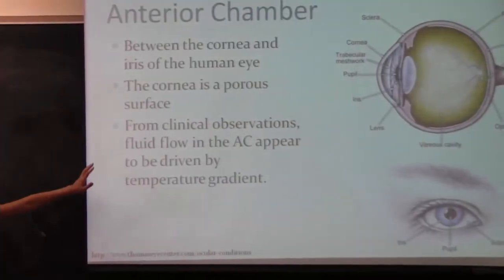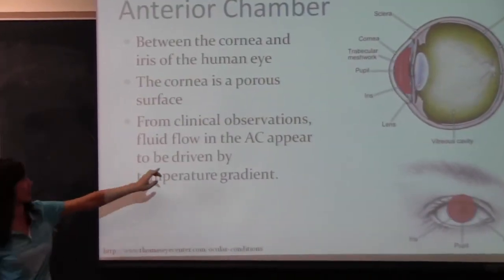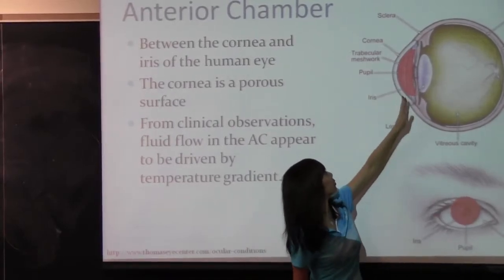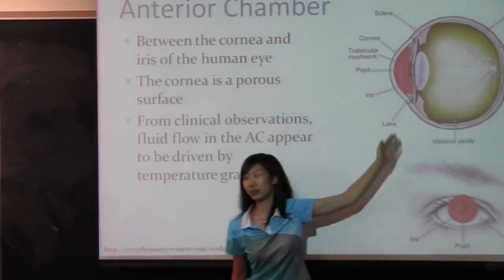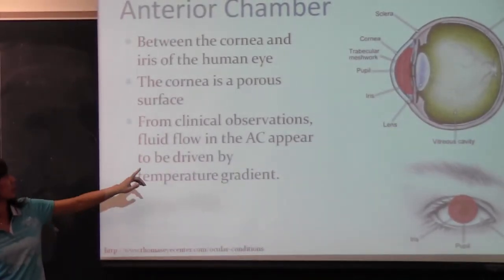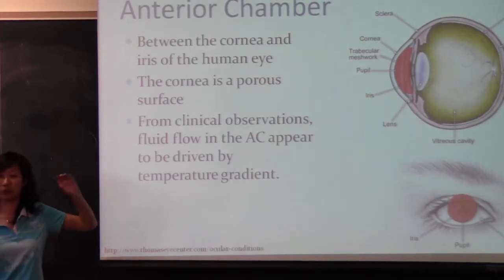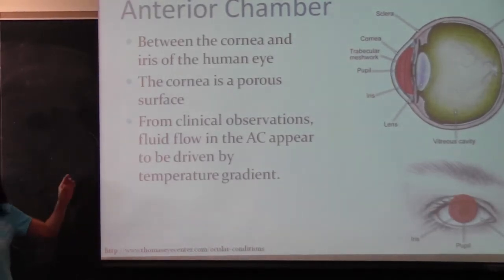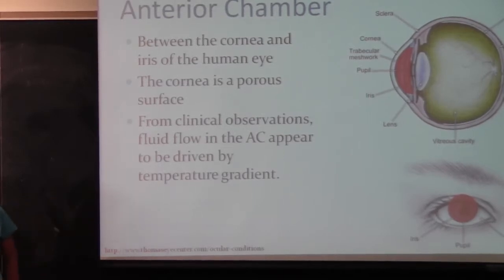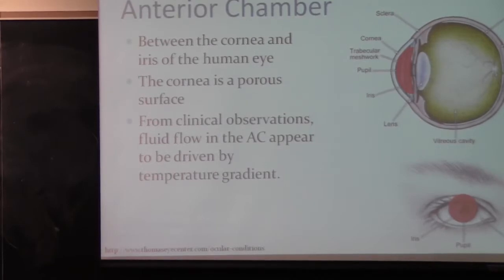First of all, where is the anterior chamber? It is right here. It is between, here is the cornea of the eye. So it is between the cornea of the eye and the iris part of the eye. So it can also be noted that the cornea is porous. That means it's permeable for some aqueous humor to seep through that and go on the outside. And also from clinical observations, the fluid flow in the anterior chamber appears to be driven by temperature gradient.